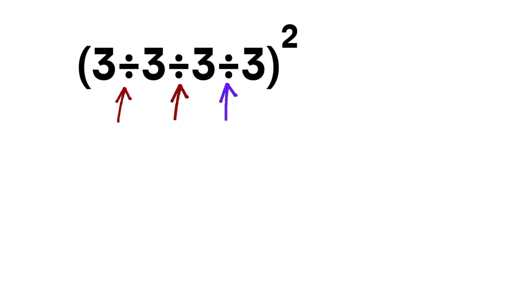Why? Because with multiple divisions, we always have to follow the order of operations, and that means we go from left to right. So let's slow it down.